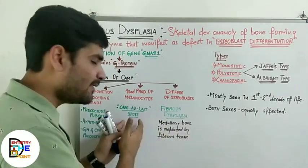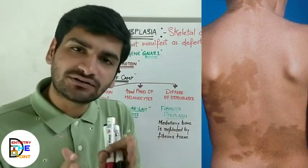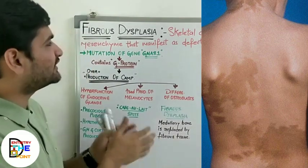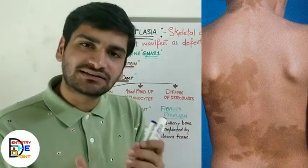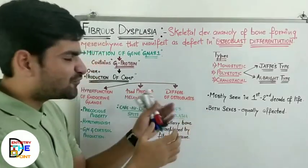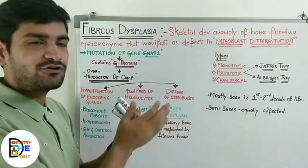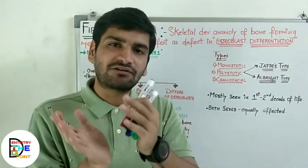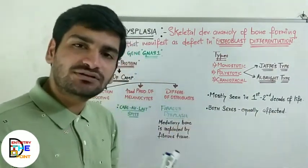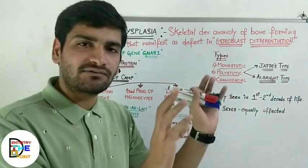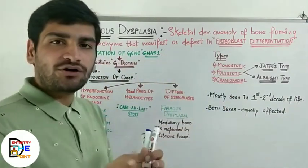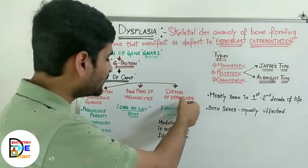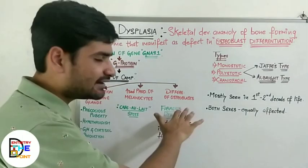Second, due to overproduction of melanocytes, there will be café-au-lait spots — brownish spots which are also seen in neurofibromatosis. These café-au-lait spots have irregular margins. Third, differentiation of osteoblasts becomes defective, which is why the medullary bone is replaced by fibrous tissue, resulting in fibrous dysplasia.